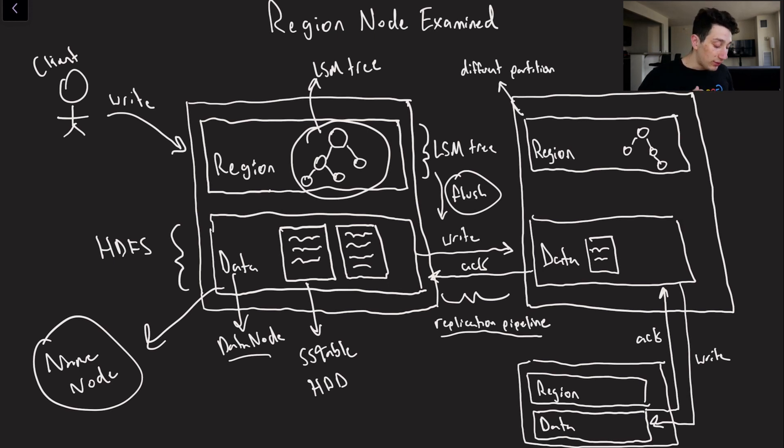Basically all of the sstables that are eventually flushed to HDFS are going to be replicated through that replication pipeline, and that is how we make sure that we have fault tolerance in our data.